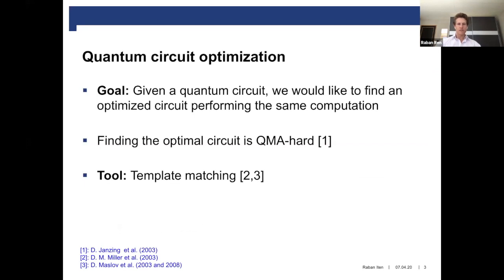Finding the optimal circuit is in general QMA-hard. So we will not expect that we find an efficient algorithm that performs this task, even not on a quantum computer. There are different tools that perform pretty well in practice; however, they might not be optimal. One such tool for circuit optimization is template matching, introduced by Dimitri Maslow and Miller et al. in 2003.